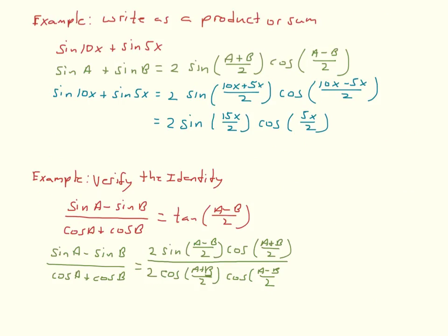Let's look at examples using the sum to product formulas. We're given the expression sine of 10x plus sine of 5x and asked to write it as a product. Using the formula: sine of a plus sine of b equals two sine of a plus b over two, cosine of a minus b over two, with a equal to 10x and b equal to 5x, we get two times sine of 10x plus 5x over two, times cosine of 10x minus 5x over two. Simplifying, that equals two times sine of 15x over two, cosine of 5x over two. That is the final answer.